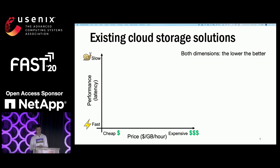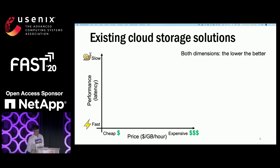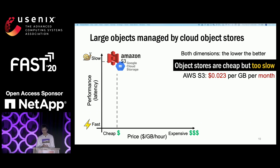In the presence of those challenges, let's check how existing cloud storage solutions handle storage-intensive web applications. Existing cloud storage solutions present a trade-off between monetary cost and performance. Here is a 2D scatter plot where the x-axis is monetary cost and the y-axis is performance in terms of latency — both dimensions lower is better. Large objects are always stored and managed by cloud object stores, which are cheap, like AWS S3, charged at around 2 cents per gigabyte per month.